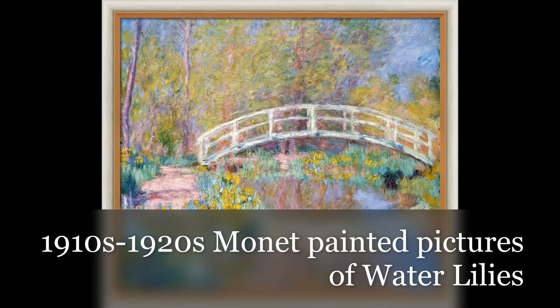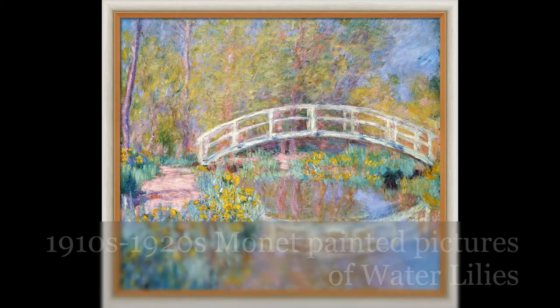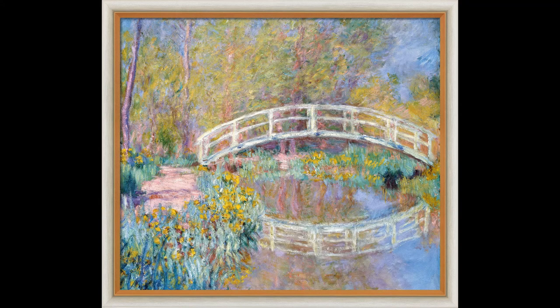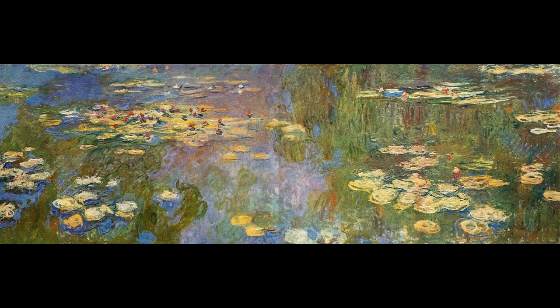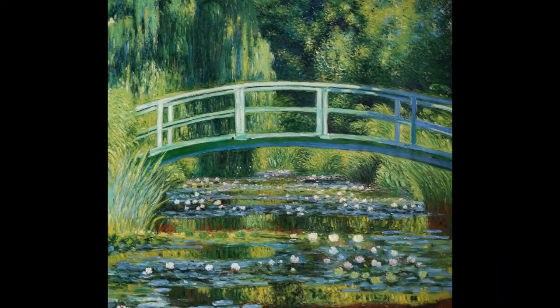By the 1910s, Monet began to paint water lilies. This is what he became most famous for. Monet wanted to capture the impression of nature. As you can see, these paintings are filled with water lilies and even bridges.